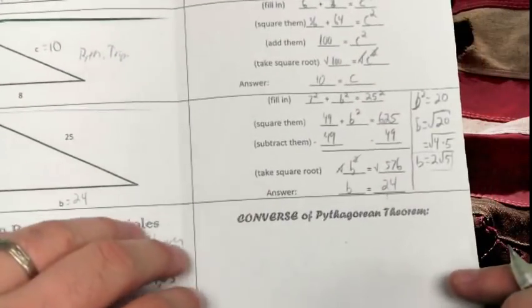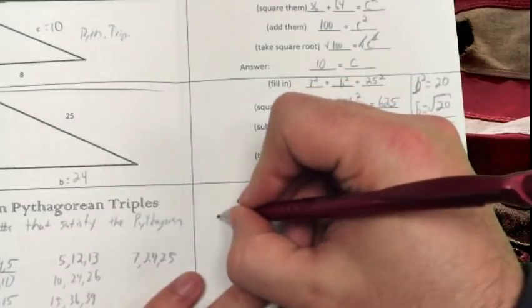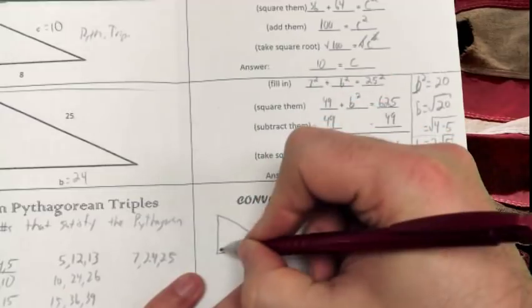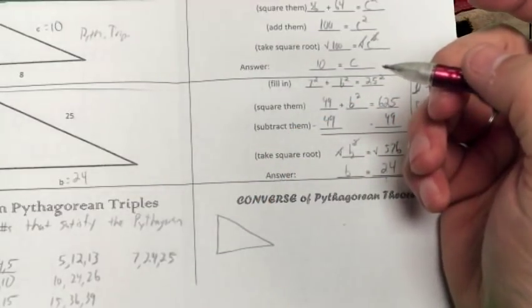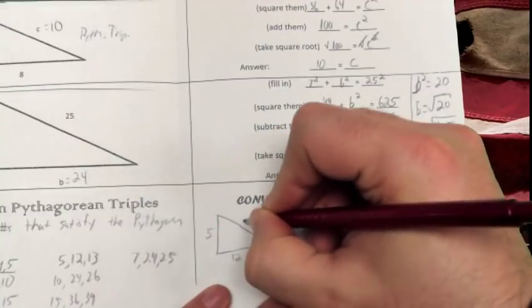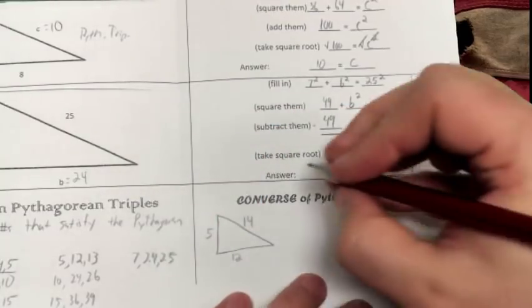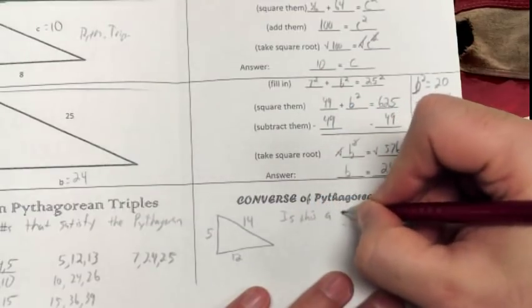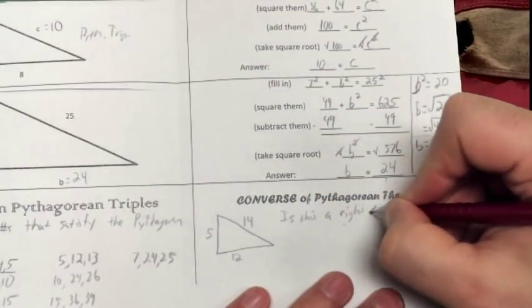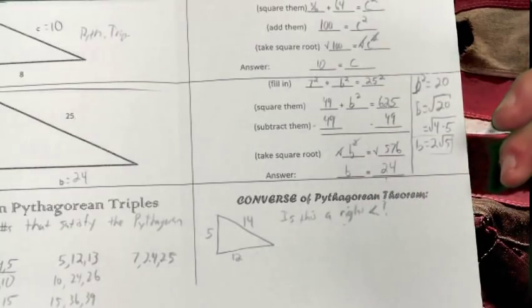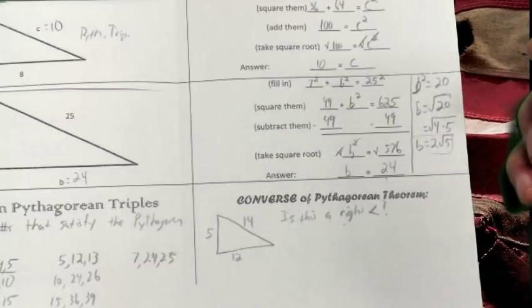Alright. Converse of the Pythagorean theorem. This is the kind of thing that you'll get. You'll have a triangle that's drawn. The angle will not be marked as right. And then you'll have something like this: 5, 12, and 14. And the question will be, is this a right triangle?